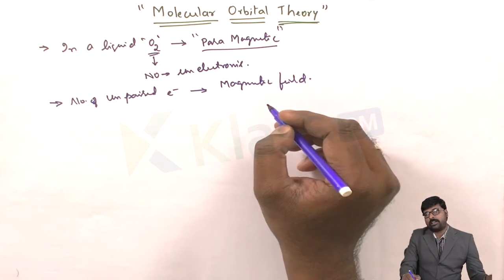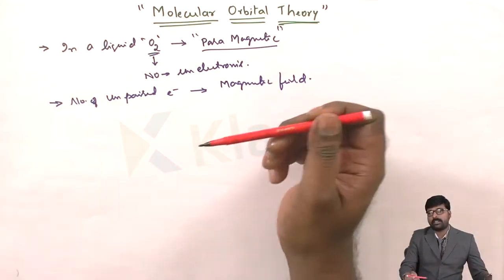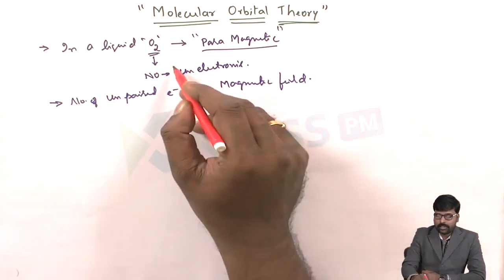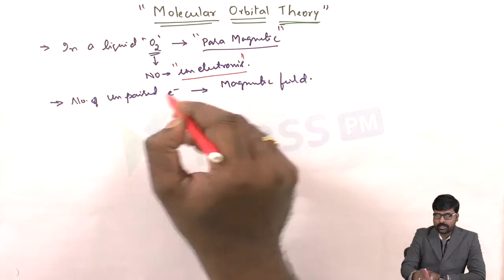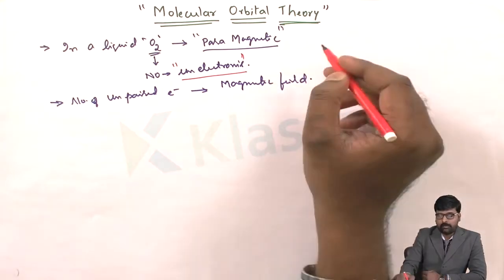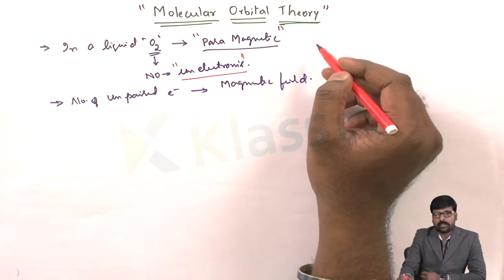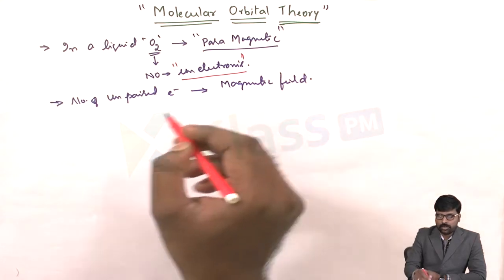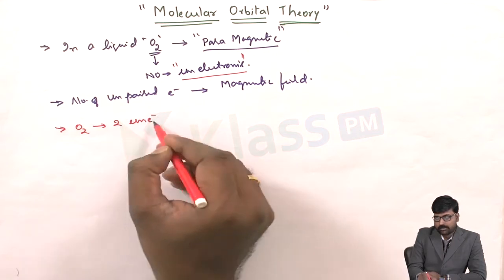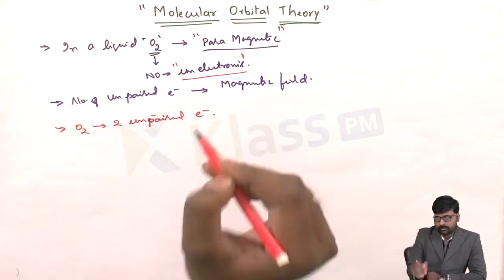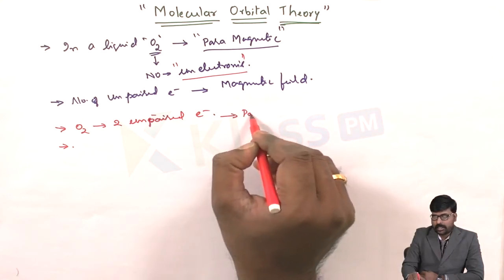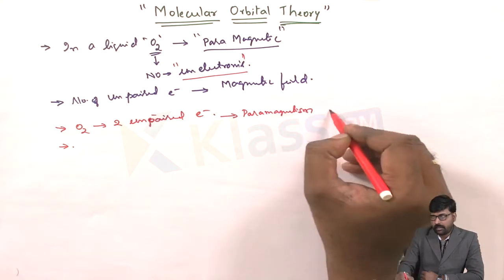Scientists then sought to understand why oxygen behaves with paramagnetic nature and what are the reasons for the formation of unpaired electrons in oxygen. This led to the development of molecular orbital theory, which succeeded in showing that the oxygen molecule does have two unpaired electrons. These two unpaired electrons are the reason for the paramagnetism of liquid oxygen.